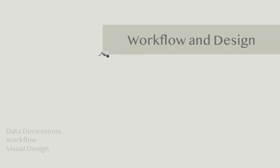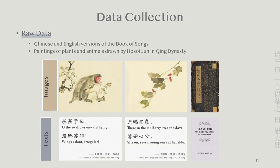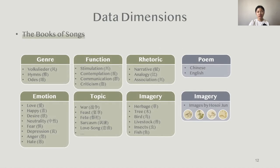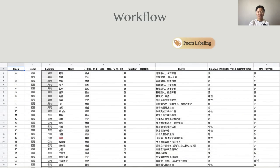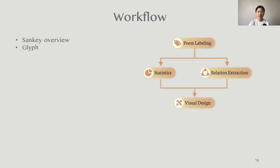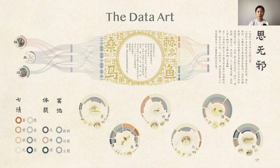We will now introduce the workflow and our visual designs. We used two types of data: Chinese and English versions of the poems, and paintings of plants and animals drawn by Hosei in the Qing Dynasty. Based on the raw data, we distilled several dimensions to describe the whole collection. We first manually labeled these dimensions for all the poems and cross-validated the labels with several authoritative studies. Then we programmed to obtain statistics of the dimensions and the relationships among different imaginaries. We further designed the visual representations, and here is our pictorial for the Book of Songs.